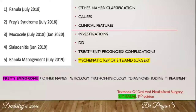In the case of sialadenitis, you need to mention that it is an infection. Infection can be viral or bacterial. Then you need to mention what organisms are found in sialadenitis. The rest of the headings remain the same.